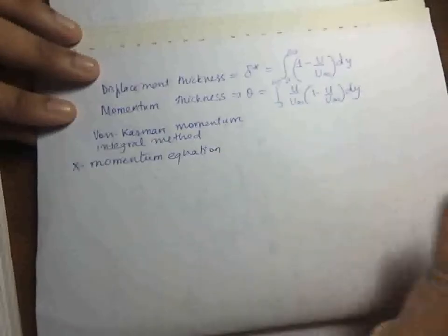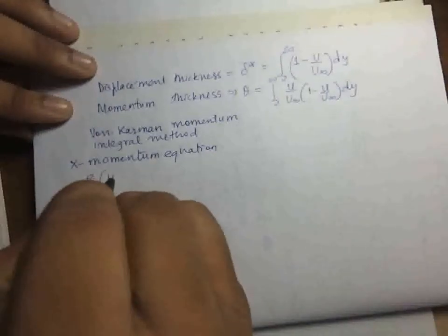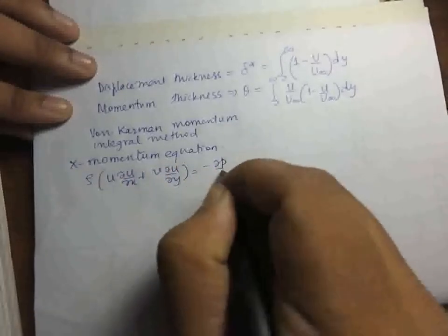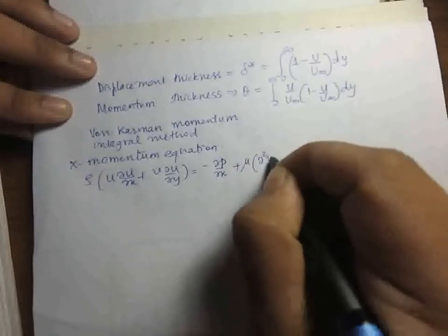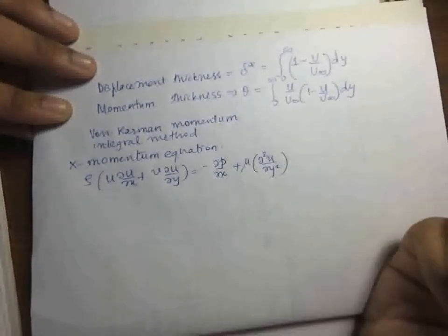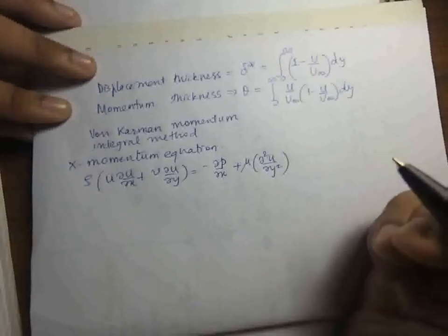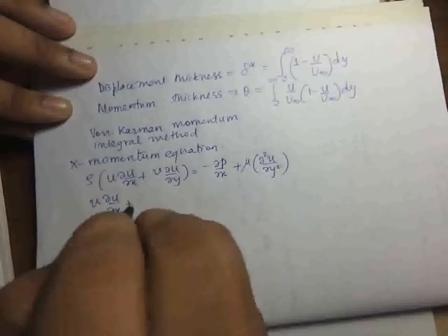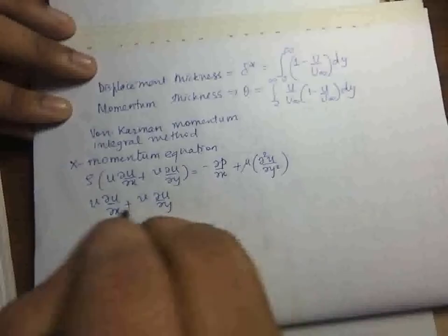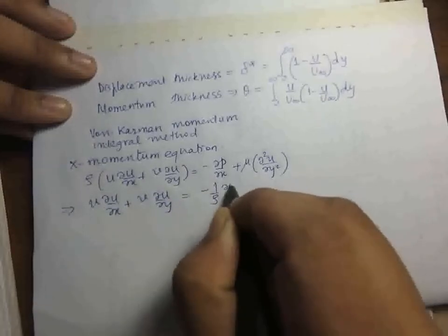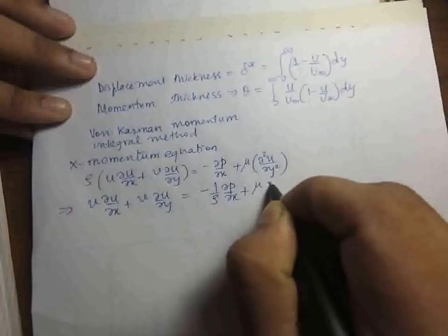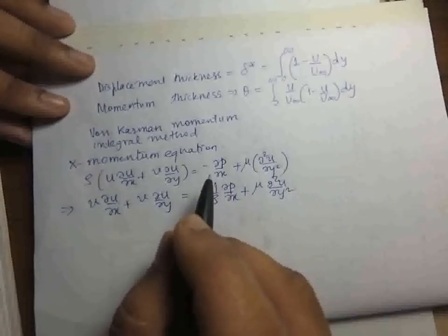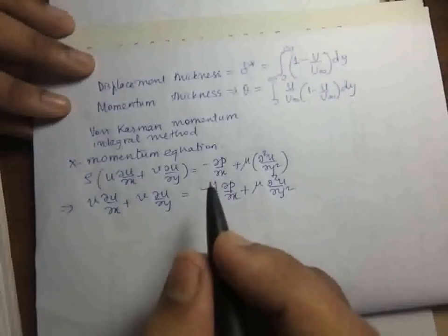We have rho u (del u / del x) plus v (del u / del y) equal to minus del p / del x plus mu (d²u / dy²). Dividing everything by rho, we get u (del u / del x) plus v (del u / del y) equal to minus (1/rho)(del p / del x) plus (mu/rho)(d²u / dy²). We have already seen from the y-momentum equation that the pressure gradient inside the boundary layer is imposed from the external conditions.